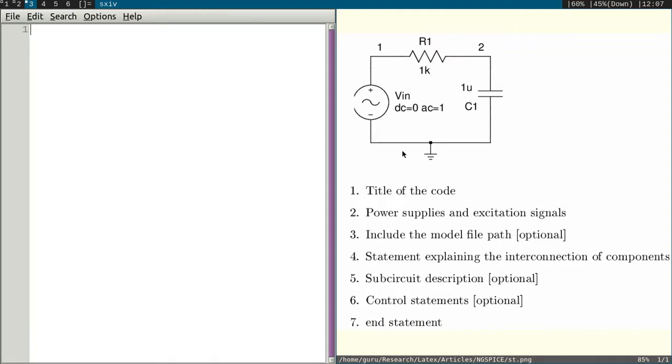First you have to number the node. We have three nodes here. This is node 1, node 2, and ground or earth by default is ground node 0. The first line of the program is title of the code. Whatever you write in the first line, that is considered to be a comment and it is the title of the circuit. We will write that this is the first circuit.